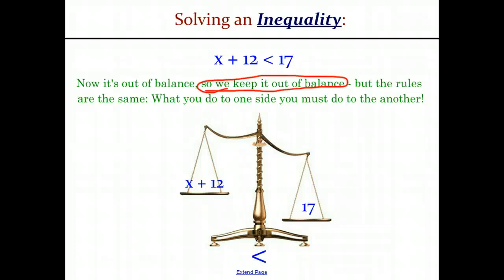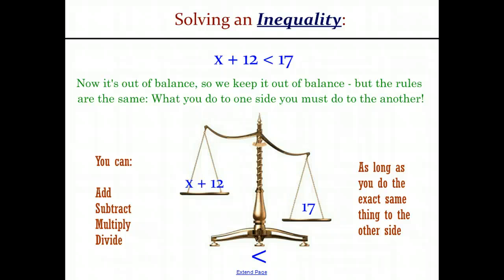But the rules are the same as they are for equations. What you do to one side, you must do to the other to maintain a true inequality. So you can add, subtract, multiply, divide, pretty much any number that you want. But you have to do the same thing to the other side, and depending on the way you multiply or divide, you may have to look at our inequality sign and make some changes there.